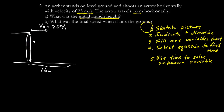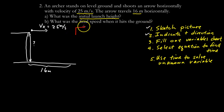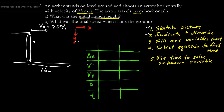Step two is to indicate the positive direction. This time I'll make right positive and down positive, just to show that you can do it either way — as long as you're consistent. Then we move on to step three: filling out the variables chart for both horizontal and vertical motion.